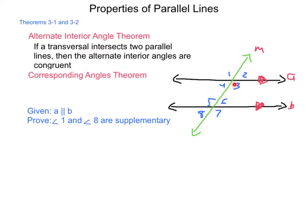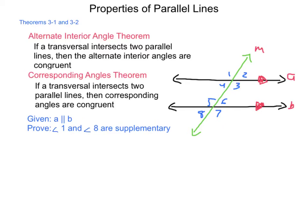Next is the corresponding angle theorem, Theorem 3.2. This states that if a transversal intersects two parallel lines, then corresponding angles are congruent. Just as we established that angles 2 and 3 form a linear pair and are supplementary, the same-side interior angle postulate tells us that angles 3 and 6 are supplementary. Eliminating angle 3, angles 2 and 6 must be congruent to one another, and the same logic follows for the other corresponding pairs.